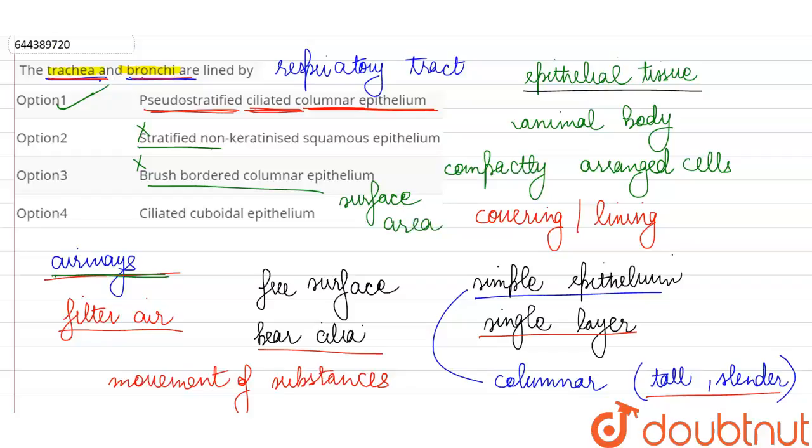And finally they are saying ciliated cuboidal epithelium. So the ciliated part is correct, but the cells are not actually cube-like, they're not cube shaped, they're tall and slender, so we will say columnar, and option A will be our correct answer.